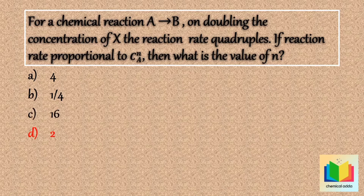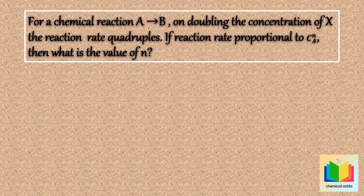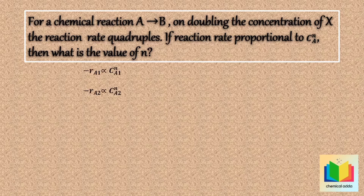Now let's see the explanation. Given: reaction rate is proportional to cA raised to n. For the initial condition, the rate of reaction can be written as: minus rA1 is directly proportional to cA1 raised to n. For the second condition: minus rA2 is directly proportional to cA2 raised to n. Dividing the first condition rate by the second condition rate, we get rA1/rA2 equal to cA1 raised to n divided by cA2 raised to n, which can be written as cA1 divided by cA2, whole raised to n.